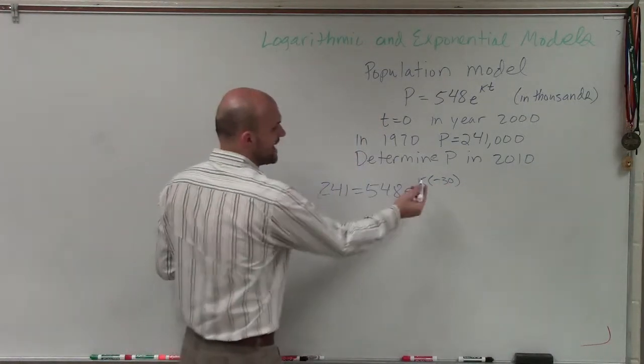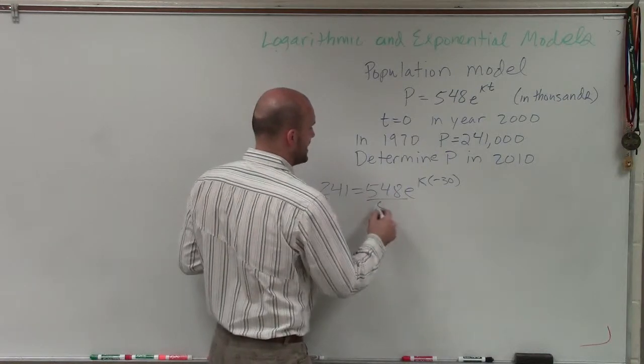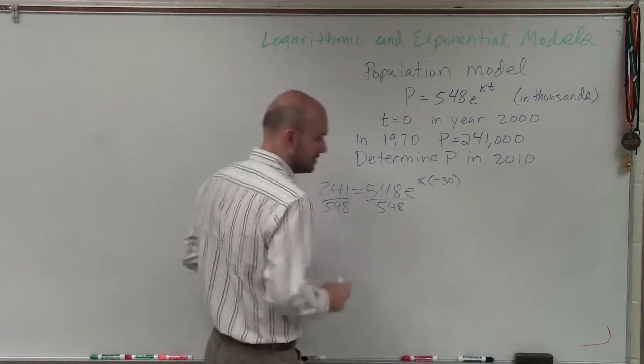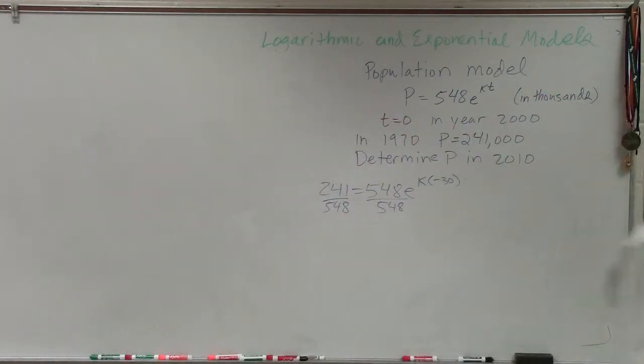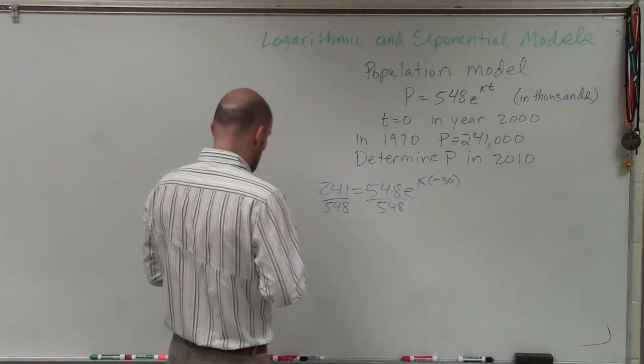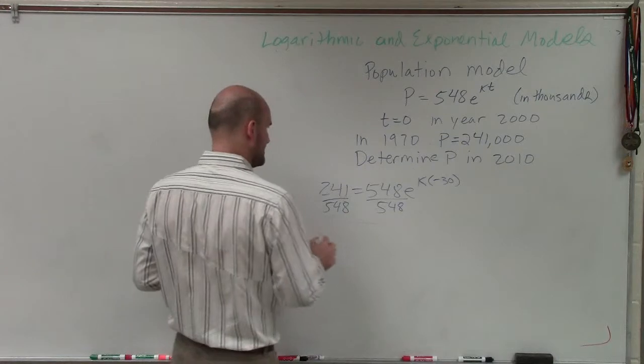So now I need to solve for k. To do that, I'll divide by 548. Take my calculator, and I do 241 divided by 548. That's going to give me a decimal, which I'm just going to leave.